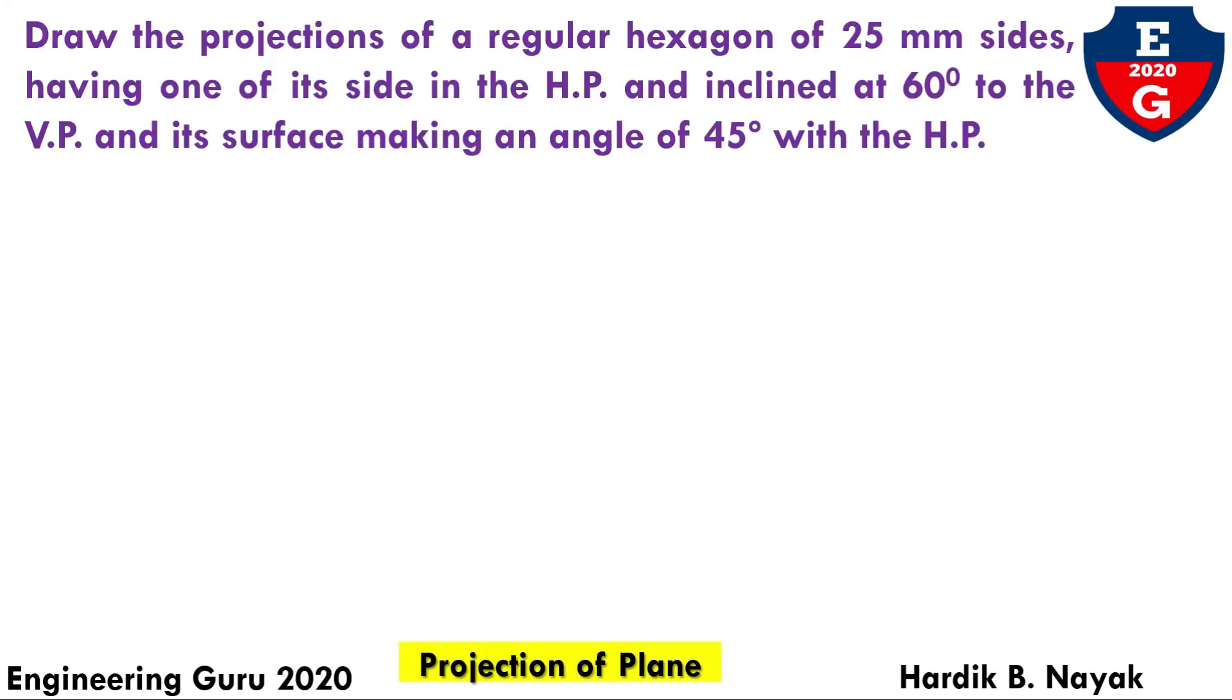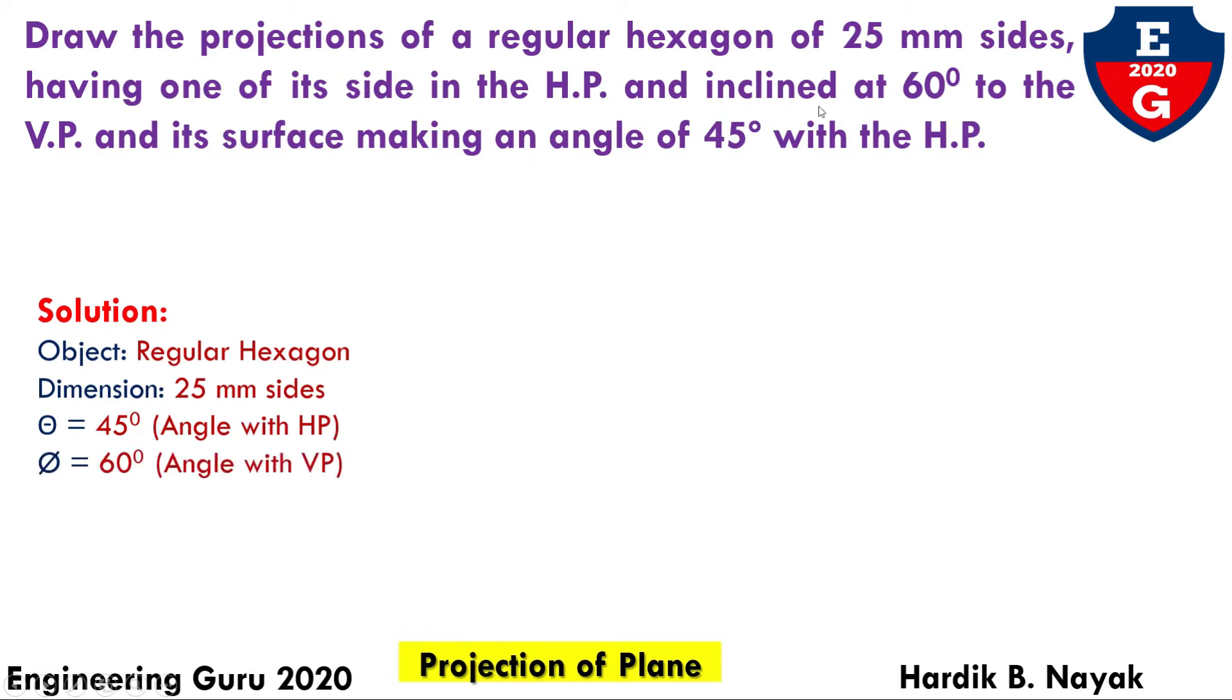Here, this is the question. The basic shape is a regular hexagon having sides 25 mm, and its surface making an angle 45 degrees with the HP, which means theta equals 45 degrees with HP, and inclined at 60 degrees to the VP, which means phi equals 60 degrees, angle with VP.